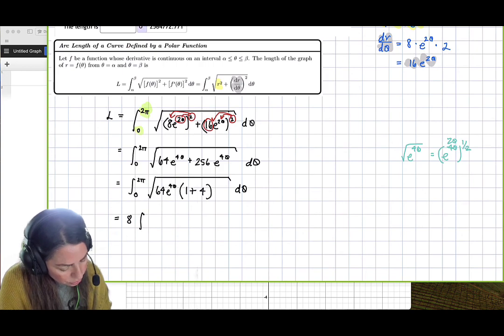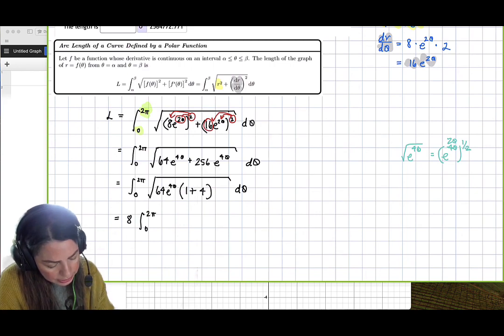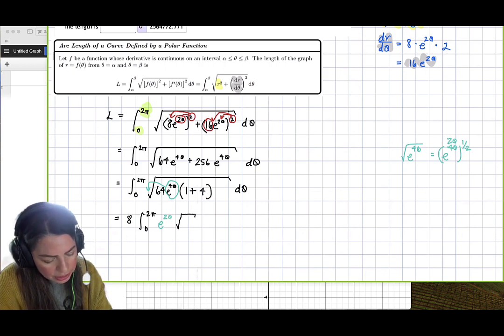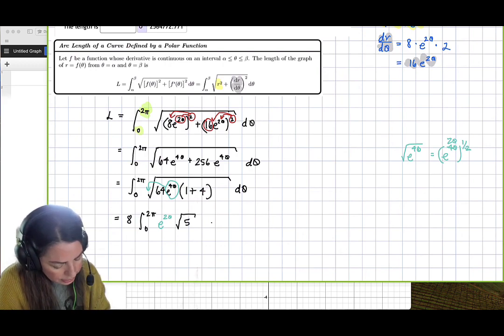definite integral 0 to 2 pi. And then we're going to go ahead and take this out in front and have e to the 2 theta. And then inside the radical, the only thing that is left now is 1 plus 4, which is 5 d theta.